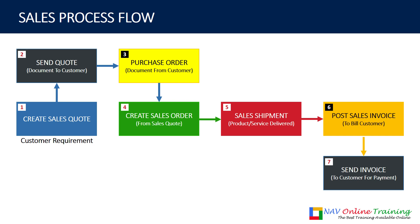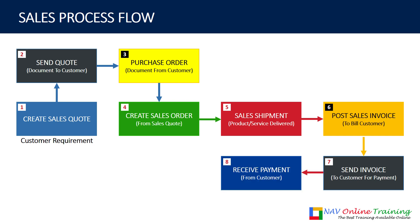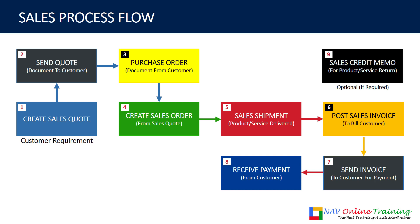You send the invoice for the customer to make payment, and finally the customer sends you the payment and you receive it. This is the entire sales process. Now, if the customer says that the product you sent is not meeting quality requirements, or the services are not as per expectations, and they say they don't want it and you can take it back — what you do in that case is you create a sales credit memo. It's for product or service return. It's an optional step, but if there's any adjustment needed, you create a sales credit memo, which basically reverses the impact of the sales invoice.